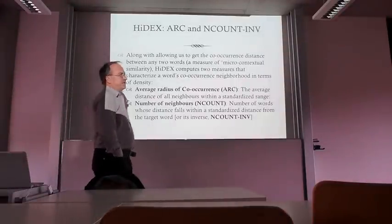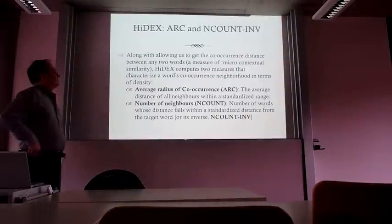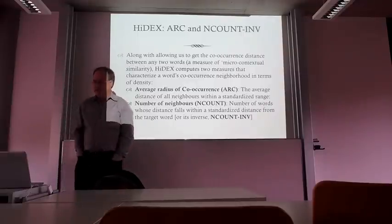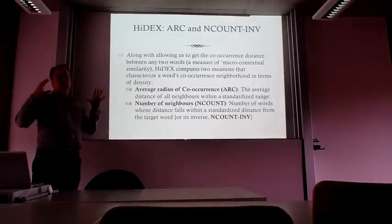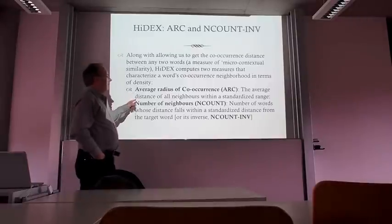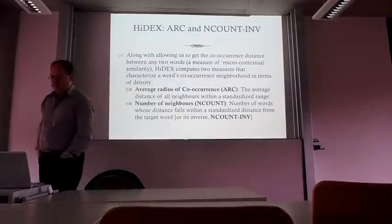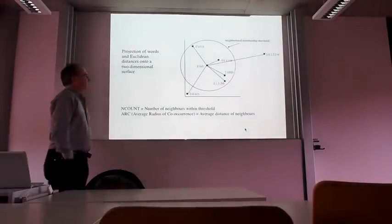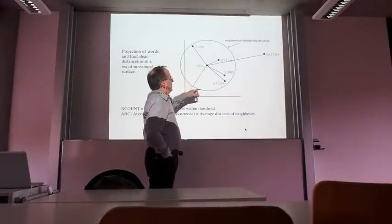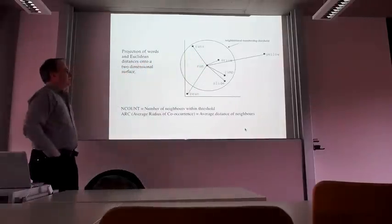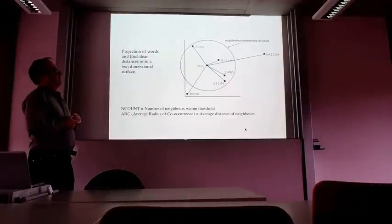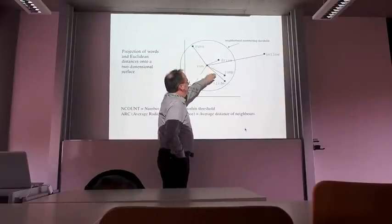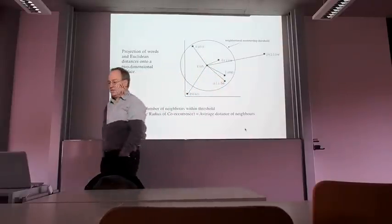One thing you can get is how similar words are by comparing their vectors directly—a direct co-occurrence measure of similarity. We also compute two measures that characterize the co-occurrence neighborhood of a word in terms of its density: the average radius of co-occurrence (ARC), which is the average distance of all neighbors falling within a standardized range, and the number of neighbors that fall within that range, which we call N-count. I use the inverse of N-count for technical reasons. We compute a threshold dynamically as a function of the average distance between randomly chosen words, then count the words within that threshold for N-count and get their average distance for ARC.